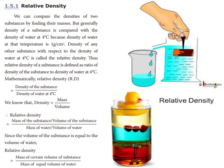So that reference is 4 degrees Celsius. The relative density is the ratio of the density of a substance to the density of water at 4 degrees Celsius, which is 1 gram per centimeter cube. For example, kerosene — the relative density of a substance is the ratio of its density to the density of water at 4 degrees Celsius.